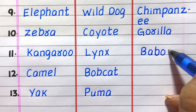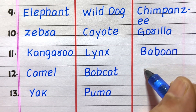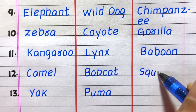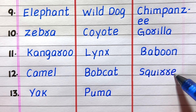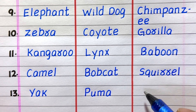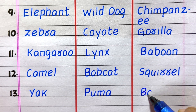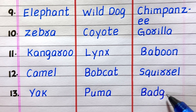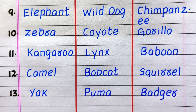Ninth example of an omnivore animal is chimpanzee, tenth sheep, twelfth squirrel, thirteenth badger.